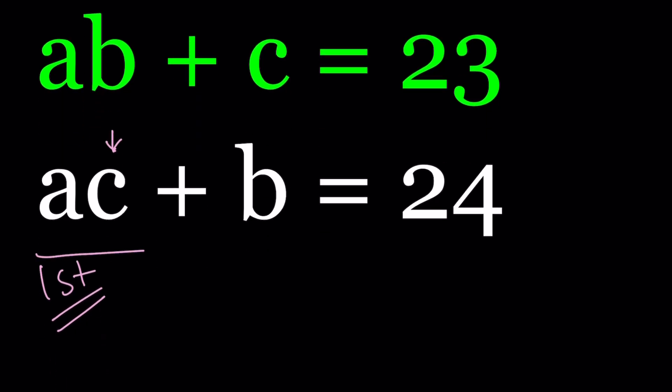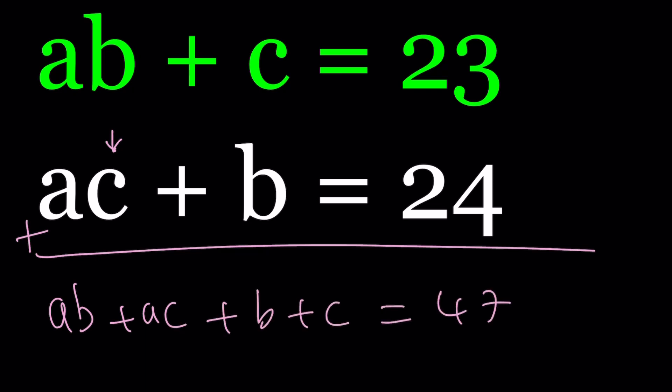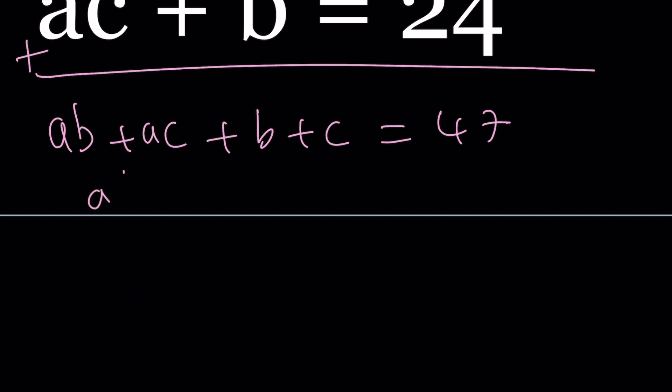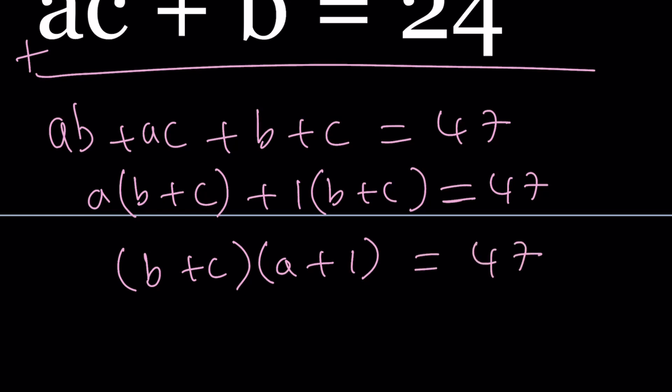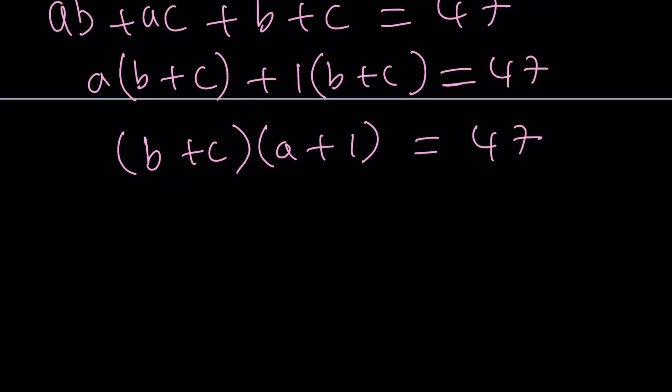So here's what we're going to do instead. We're going to go ahead and add these two equations. That's going to be our first method. Let's go ahead and add them. AB plus AC plus B plus C equals 47. One of the things that's good is that 47 is a prime number. And then we can kind of take out a one here. Now this is factorable by grouping. I can take out a B plus C. And A plus one is going to be my second factor. Now here's what you need to think about. B plus C and A plus one are factors of 47. And 47 is prime.